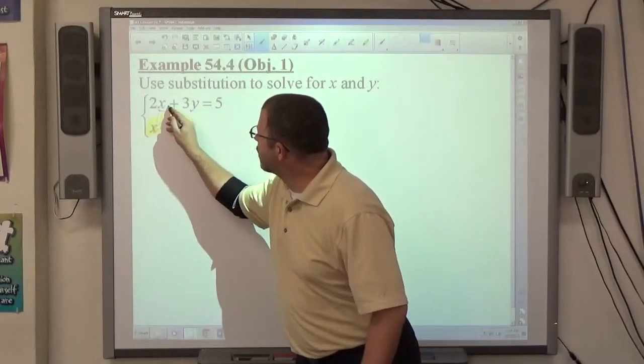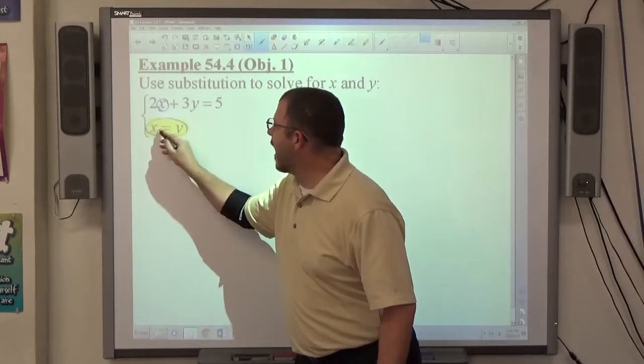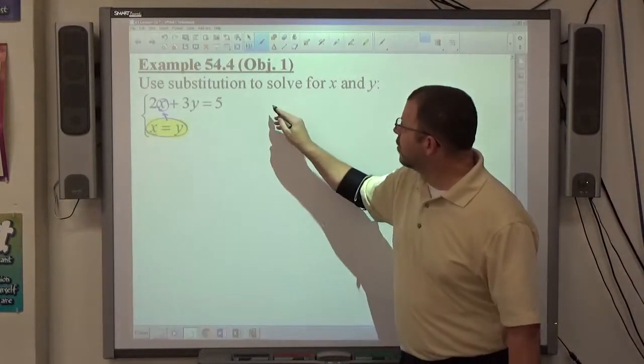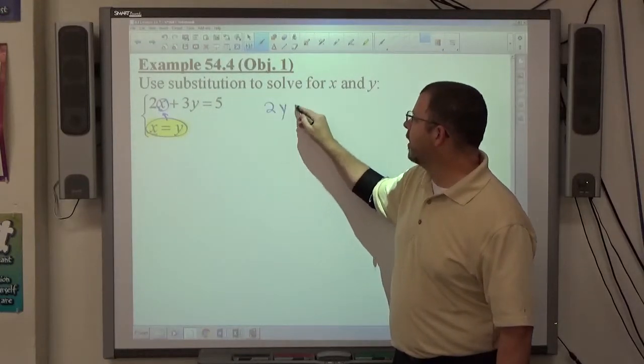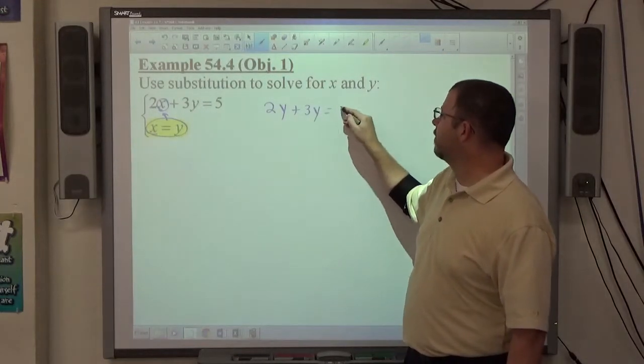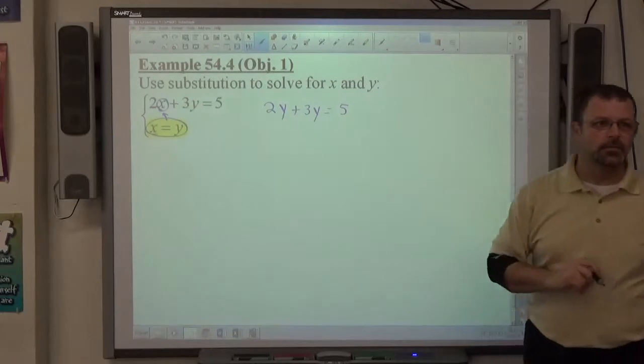So, I'm going to change this x into a y because of this fact. So, 2x is going to be changed to 2y, 3y is going to stay 3y, and 5 is going to stay 5.